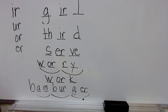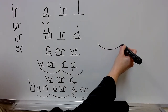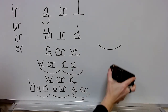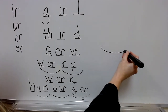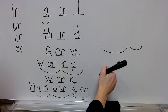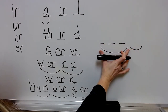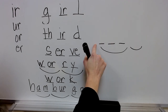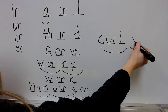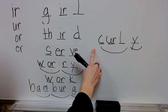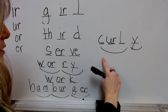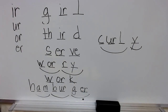One more word: curly. What word? Let's think of the base word of curly. Our base word is curl. And then you have an ending: curly. The base word is curl. Write curl, and then you have your ending E. Check it. Spell curly. Yes, curly.